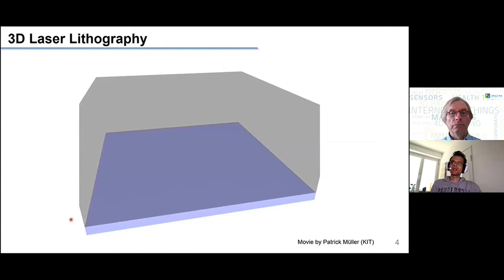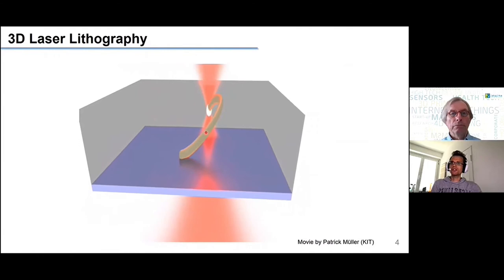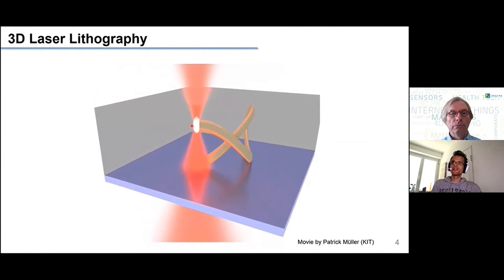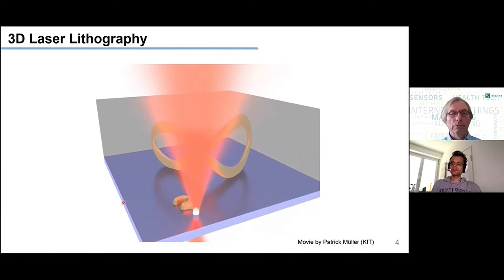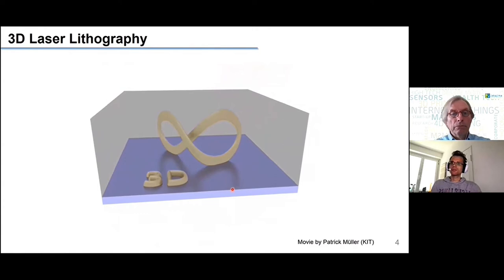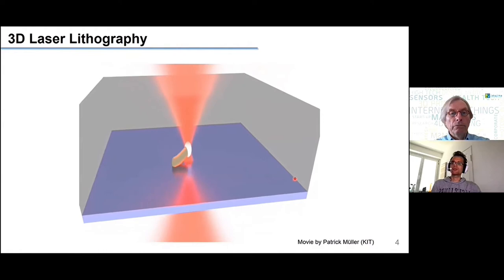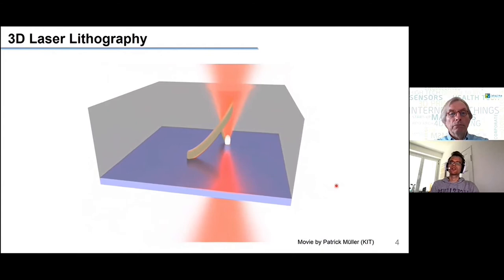We have a glass slide on the bottom and a liquid photoresist on top. We focus a femtosecond pulsed laser beam into this liquid photoresist. Due to the non-linearity of the process and the threshold behavior of the resist, we only polymerize the material in the very focus of the laser beam. We can move this laser beam around in an arbitrary manner and thus create any three-dimensional structure we want, as long as it's attached to the substrate. When finished, we remove the residual photoresist and are left with the structures on our sample.